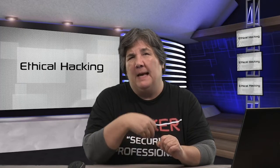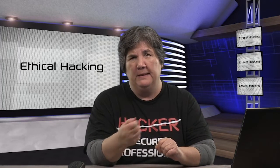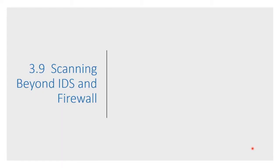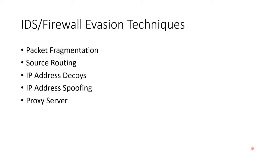Let's talk about scanning past intrusion detection and past a firewall. There are some ideas in firewall evasion techniques: fragment your packet so the signatures don't look obvious, choose source routing, have decoys, spoof addresses, and use a proxy.